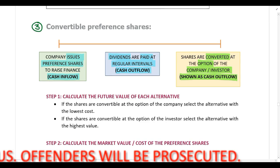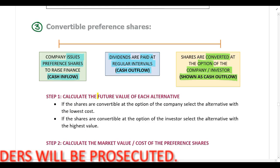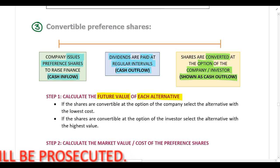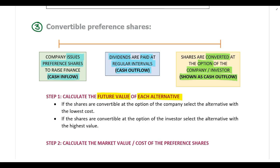If you're dealing with a convertible preference share, you break your calculation down into two steps. First, calculate the future value of each alternative. After you've calculated the future value of each alternative, you select the alternative. The selection depends on whether the preference shares are convertible at the option of the company or the investor. If convertible at the option of the company, you select the alternative with the lowest cost, because the company would go for the option cheapest for them.